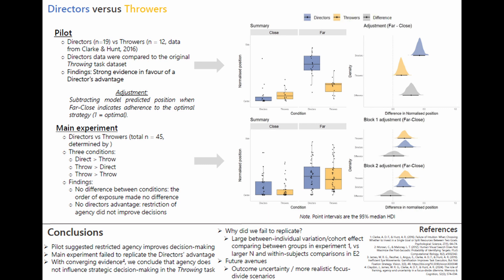To confirm the effect, we conducted a thorough replication, which was powered to detect even a small director's advantage if present. Three conditions also allowed us to examine order effects. The conditions were: direct then throw, throw then direct, and throw then throw. This time we found no director's advantage, and the order of condition exposure made no difference to the results.